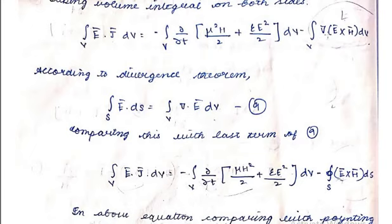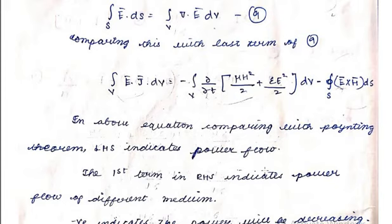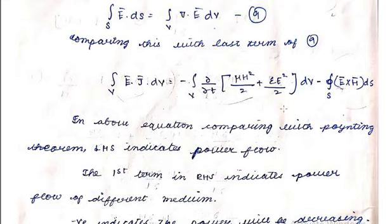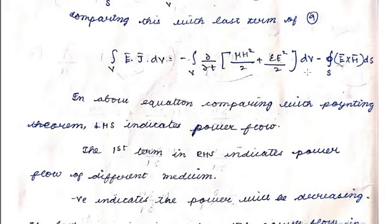The last term is converted from a volume integral to a surface integral using the divergence theorem. In the resulting equation, the left-hand side indicates the total power flow obtained using Poynting's Theorem. The first term on the right-hand side indicates power stored in the medium, related to the values of μ and ε. The negative sign of the last term represents that power is decreasing.